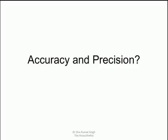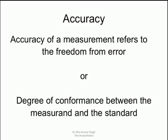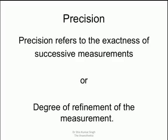So when we talk about calibration, we talk about accuracy and precision. So what is accuracy and what is precision? Now accuracy basically refers to freedom from error. How closely the measured values are to the standard values. How they conform to each other. That is accuracy.